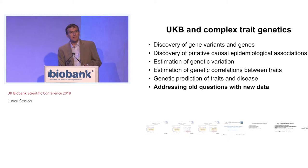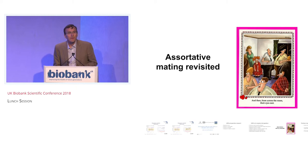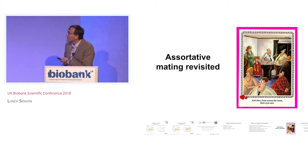A particular example I want to talk about is assortative mating, which is a form of non-random mating associated with spousal similarity, exemplified here as an attraction related to height in this cartoon, as you can see.